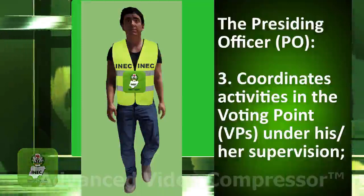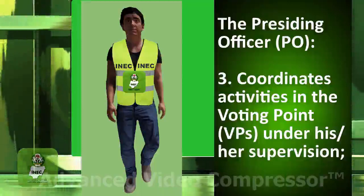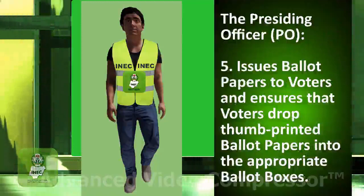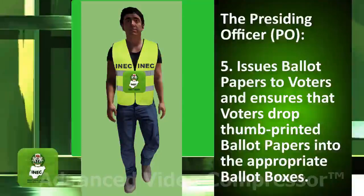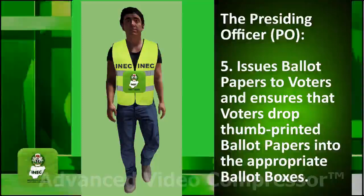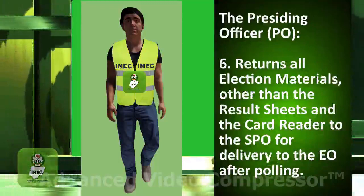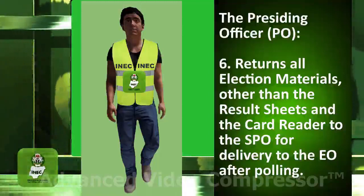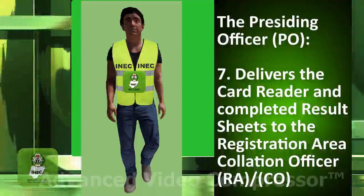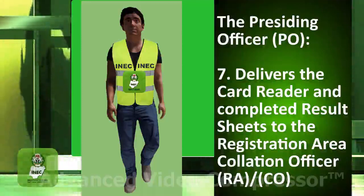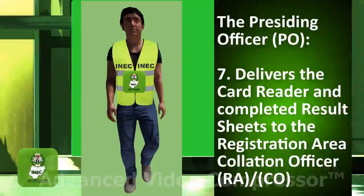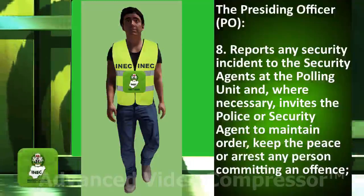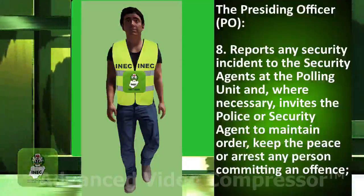Duty 3: Coordinates activities in the voting points under his or her supervision. Duty 4: Conducts voter education before polling. Duty 5: Issues ballot papers to voters and ensures that voters drop stamped ballot papers into the appropriate ballot boxes. Duty 6: Returns all election materials, other than the result sheet and the card reader, to the SPO for delivery to the EO after polling. Duty 7: Delivers the card reader and completed result sheet to the Registration Area Collation Officer (RACO). Duty 8: Reports any security incidents to the security agents at the polling unit and, where necessary, invites the police or security agents to maintain order, keep the peace, or arrest any person committing an offense.